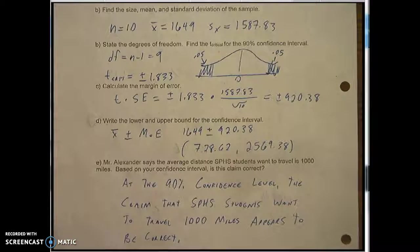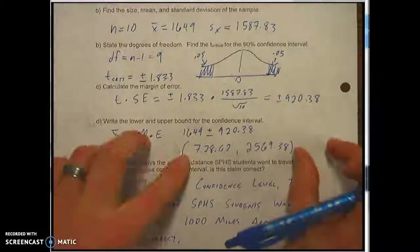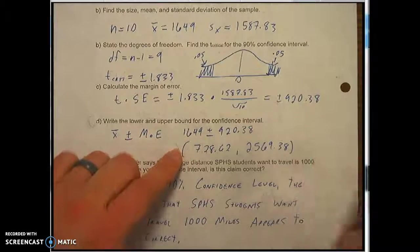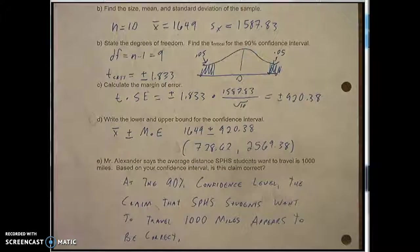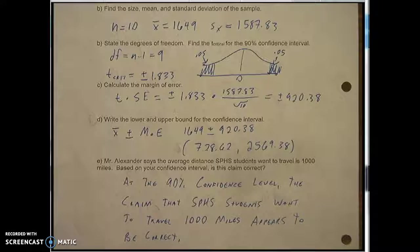What's probably better to say is it appears to be not incorrect. Because we haven't proven that they want to go 1,000 miles. We've only proven the areas where they don't want to go. So we know that it's not less than 728 and we know it's not greater than 2,500. And 1,000 falls in there. So it seems to be a valid claim instead of correct. We should really use the word valid there.